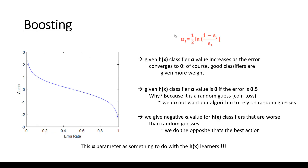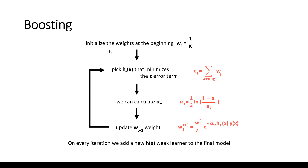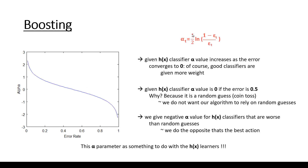Let's talk about the alpha parameter. We have to calculate alpha during the iteration, and alpha equals 1 divided by 2 times the logarithm of (1 minus the error term) divided by the error term. Looking at the plot of error rate versus alpha value, we can see that if the error rate is smaller than 0.5, it means the classifier is better than a coin flip — a random guess. A given weak classifier's alpha value increases as the error converges to zero.